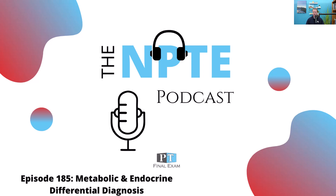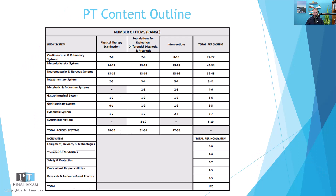As we get started today, a quick reminder about the content outline. In this podcast, we're going through all of the FSBPT's content outline. Today we are in the metabolic and endocrine systems. This section has somewhere between four and six questions on the exam. It's not a huge section, but it does cover differential diagnosis and interventions, which we've addressed before and will continue to do so.